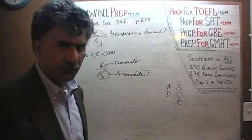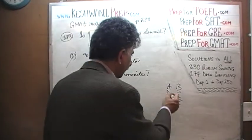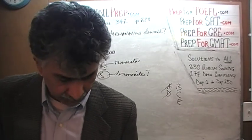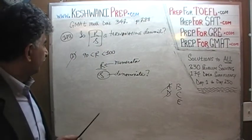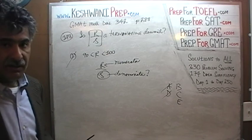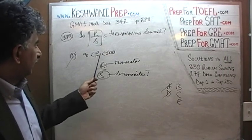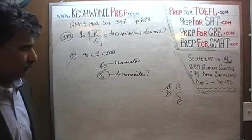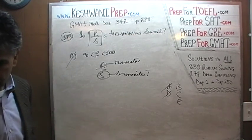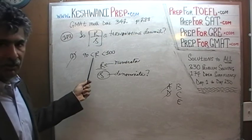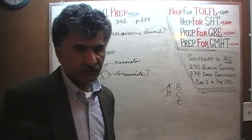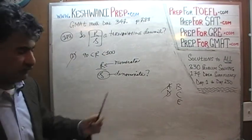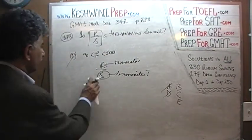Now that we have established the first statement by itself is not enough, we know the answer cannot be A or D. There are going to be some situations where it will be a terminating decimal and some where it will not be. So the first statement by itself is not enough. Let's look at the second statement.